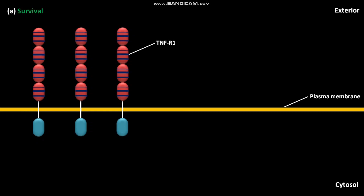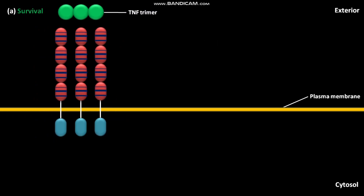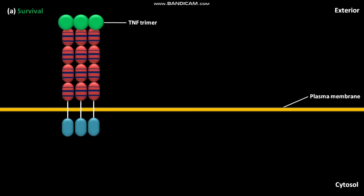TNFR1 is present in its monomeric form. The exteriorly present TNF trimer — often called TNF-alpha — binds to TNFR1, causing the TNFR1 to trimerize. This binding of trimeric TNF then activates the cytosolic death domain region, or DD region, of TNFR1.